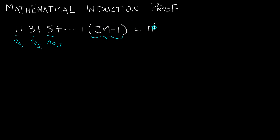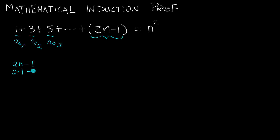And then we would plug in that 25 for the n squared on the right hand side. So how is 1 representative of 2n minus 1? Well, since n equals 1, we have 2n minus 1 with n equals 1 for that first term.